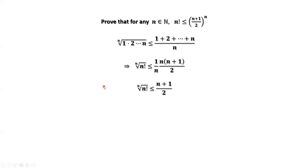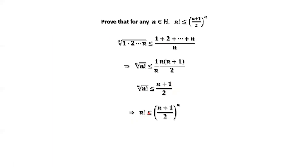Then we have the nth root of n factorial is less than or equal to n plus 1 divided by 2. Raising both sides to the power of n gives us the result.